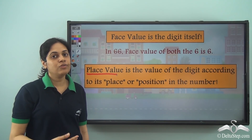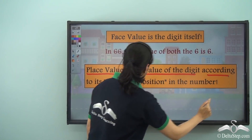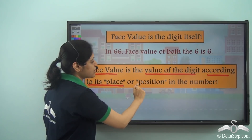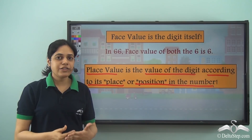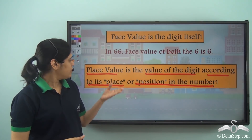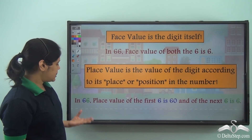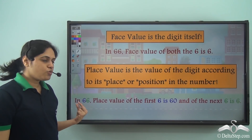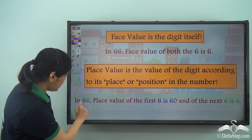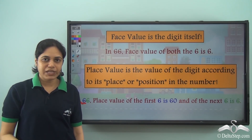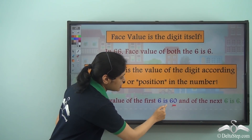What is the place value? Place value is the value of the digit according to its place or position in the number. So according to where a digit is placed in the number, we have its place value. So in 66, there are two 6s. Their positions are different. This 6 is in the tens place, so the place value of this 6 is 60.